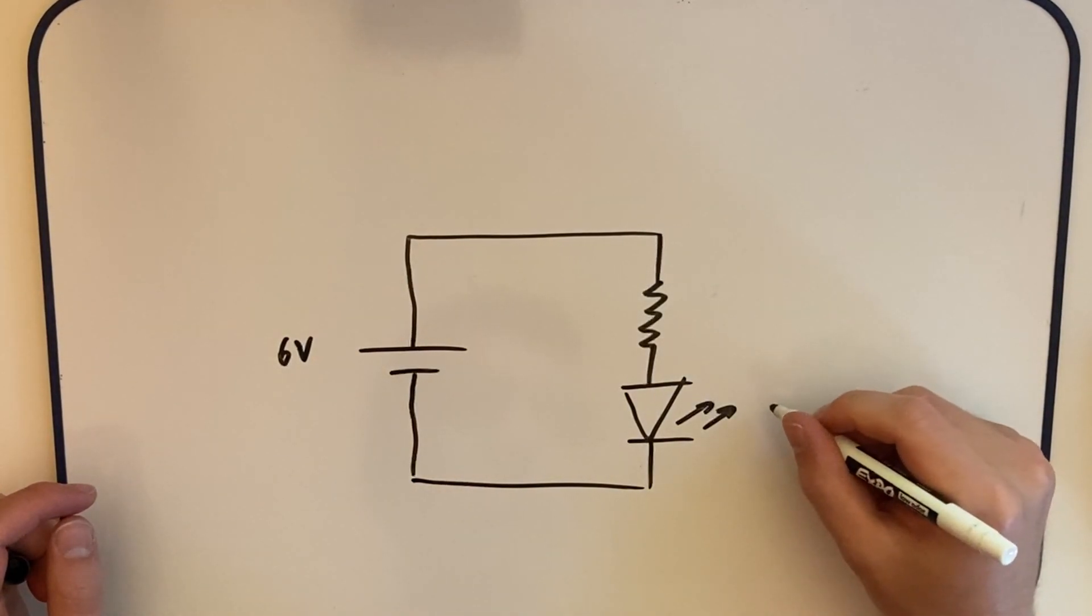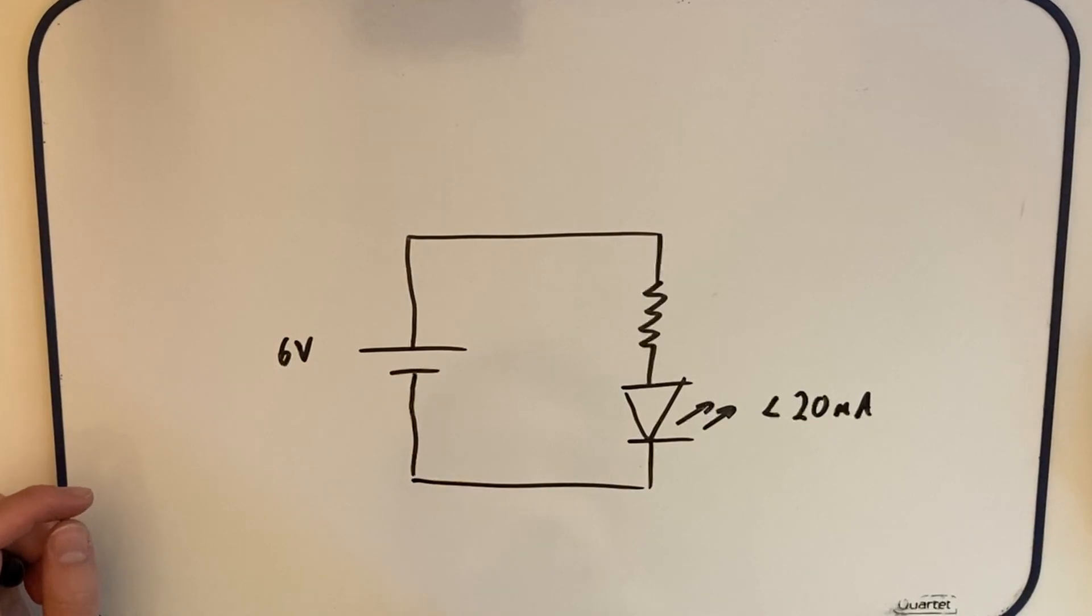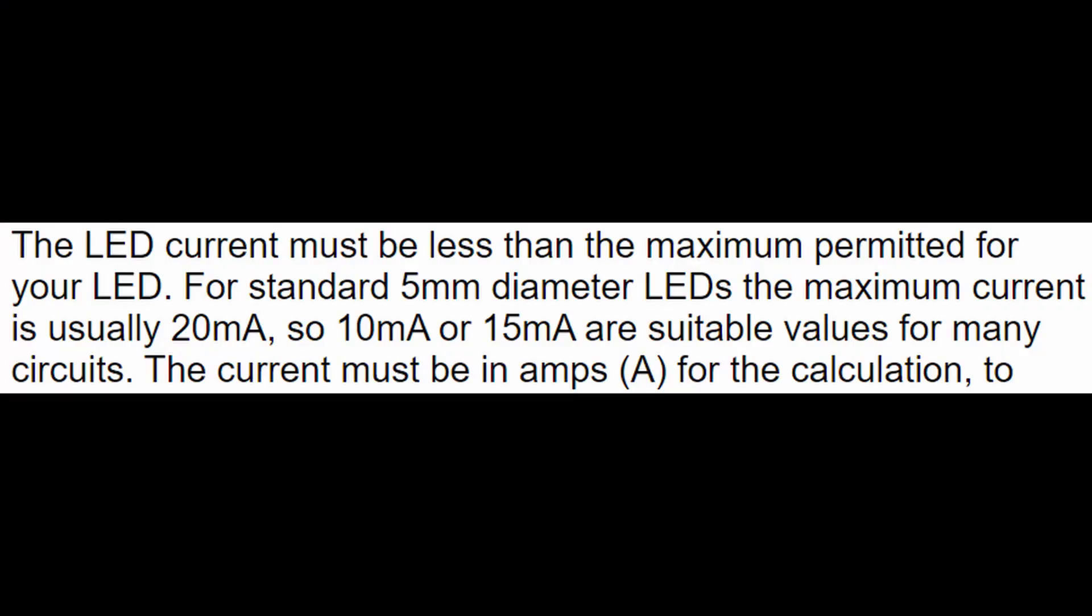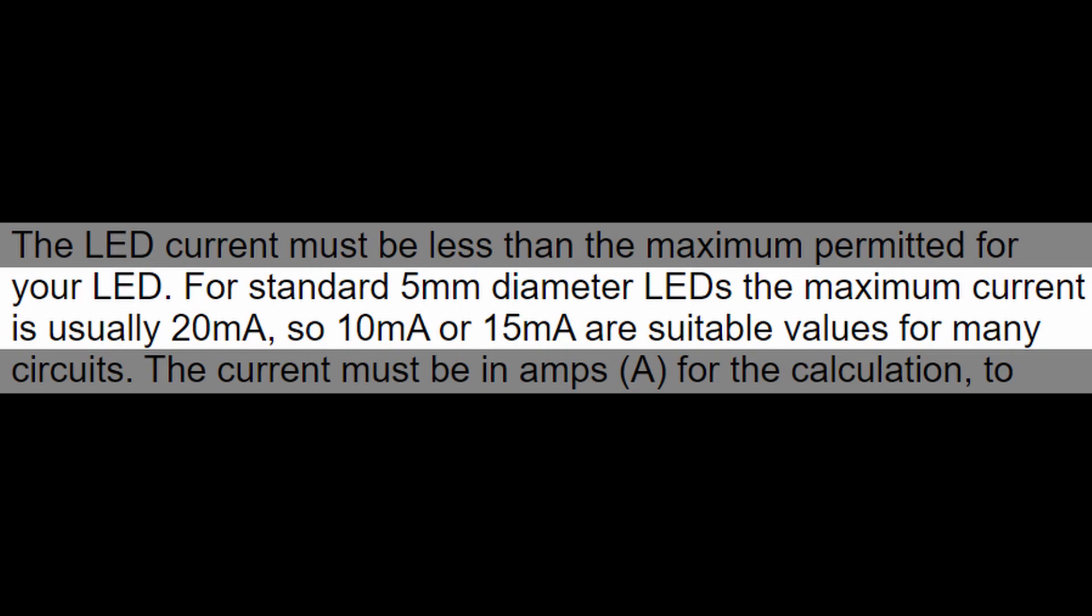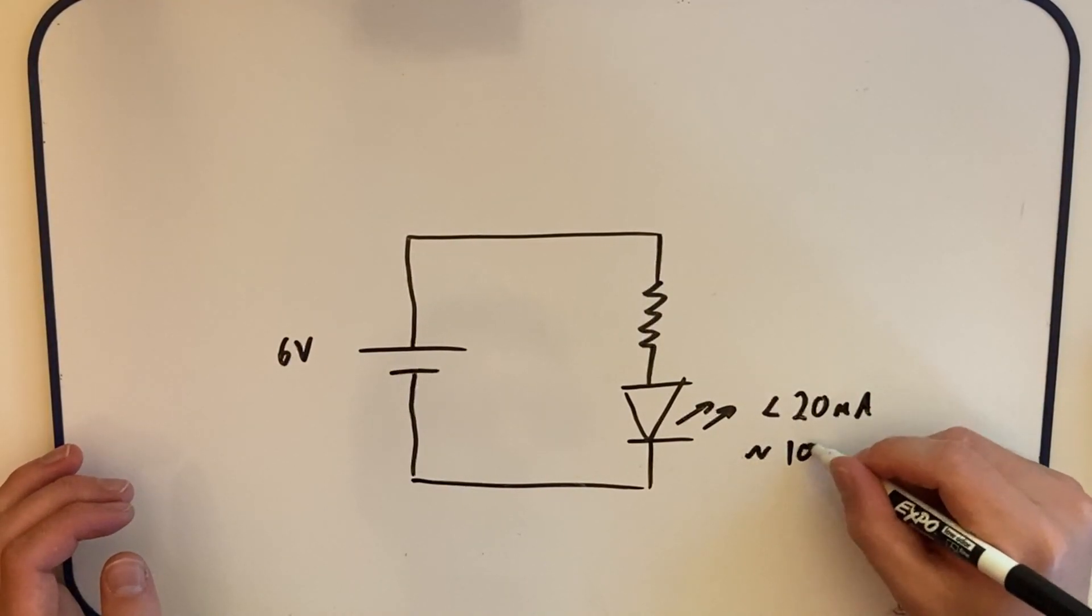The next important thing to find out is what is the maximum amount of current that the LED can handle so that we can calculate what our resistor value should be. After a quick Google search you can see that the maximum amount of current on the basic LED is 20 milliamps. So let's try to go a bit under that and use 10 milliamps as our conservative value instead.